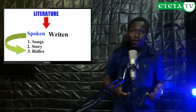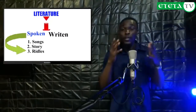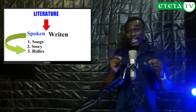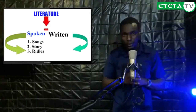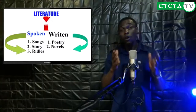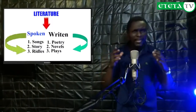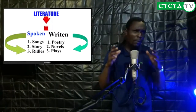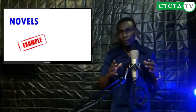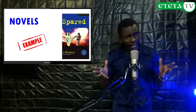Written literature involves all the kind of literature that is conveyed to the audience through written documents. Written literature has the following categories: we have poetry, we have novels, and we have plays. Examples of novels include Weep Not Child, The Wreath of Father Mayor, and Spared.